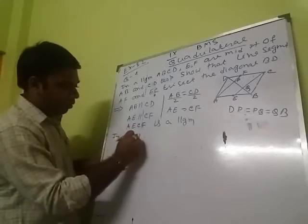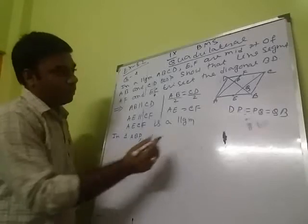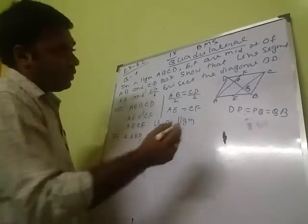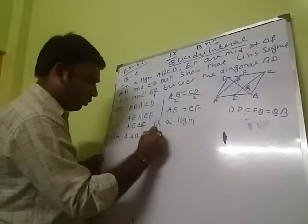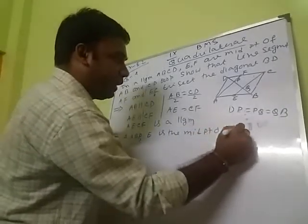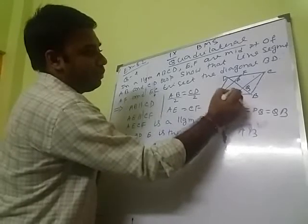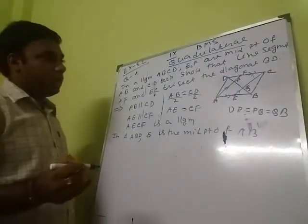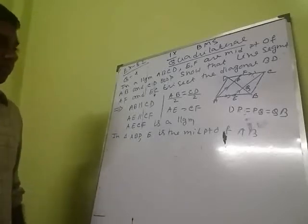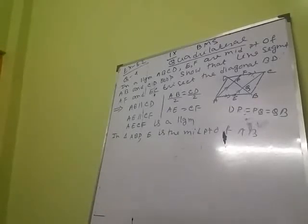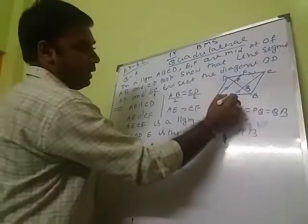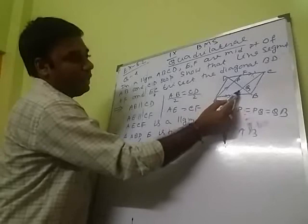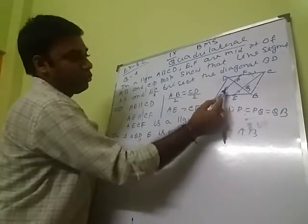Consider triangle ABP. E is the midpoint of AB. Since AECF is a parallelogram, EQ is parallel to AP, because EQ is part of CE and AP is part of AF, so they must be parallel to each other.